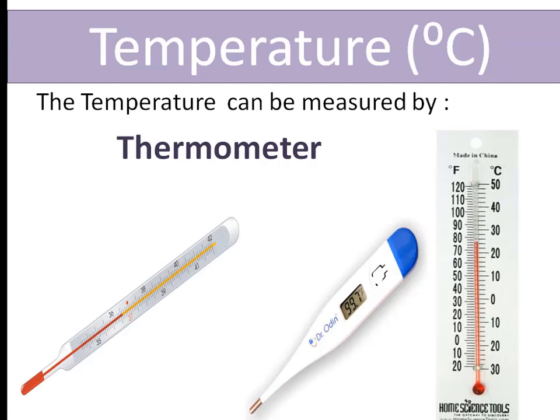Temperature can be measured by thermometer. We have different types of thermometers: alcoholic, electronic, and mercury. Temperature has a lot of units — the ones used here are Celsius, Fahrenheit, and Kelvin.